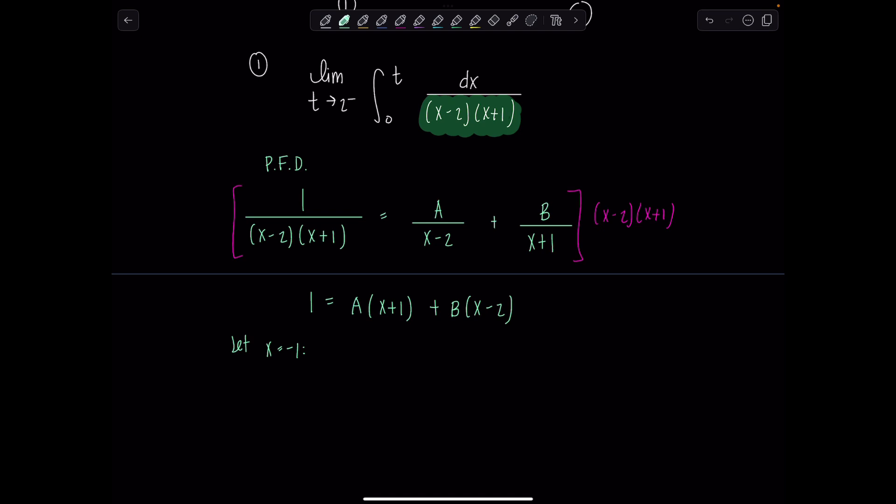So if I let x equal negative 1, I have 1 equals A times 0 plus B times negative 3, which means B is negative 1 third. And then if I let x equal positive 2, then we have 1 equals A times 3 plus B times 0, so A is positive 1 third. Well, that worked out. Very nice.